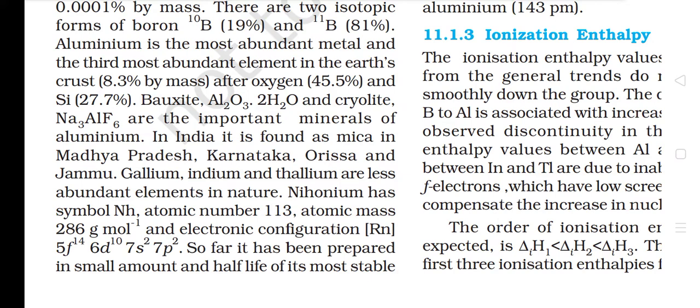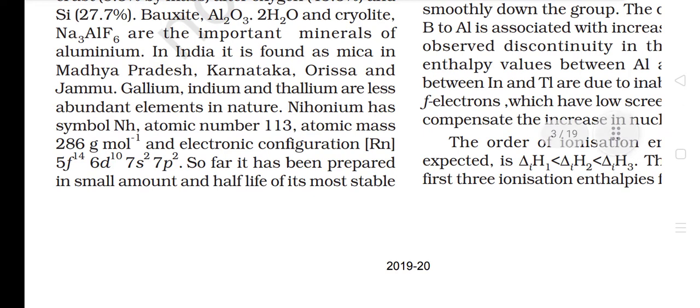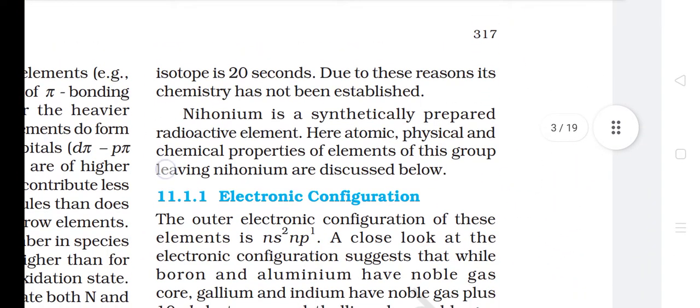In India, aluminum is found as mica in Madhya Pradesh, Karnataka, Orissa and Jammu. Gallium, indium and thallium are less abundant elements in nature. Nihonium has symbol Nh, atomic number 113, atomic mass 286 g/mol and electronic configuration [Rn]5f14 6d10 7s2 7p1. So far, it has been prepared in small amounts and the half-life of its most stable isotope is 20 seconds. Due to these reasons, its chemistry has not been established. Nihonium is a synthetically prepared radioactive element.